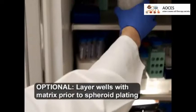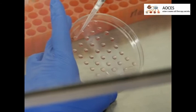To generate the 3D matrix, thaw an aliquot of growth factor reduced basement membrane solution at 4 degrees Celsius overnight.